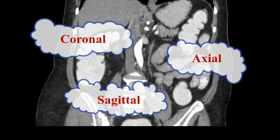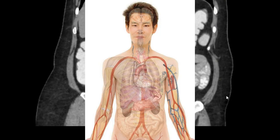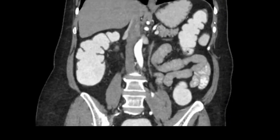How to remember this is very easy. When you can see a person in standing position in the film — the person has been cut from head to toe — and you can see the vertebrae here as well, this is a coronal image. So this is a coronal image.